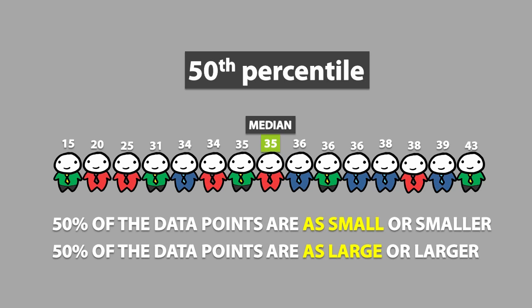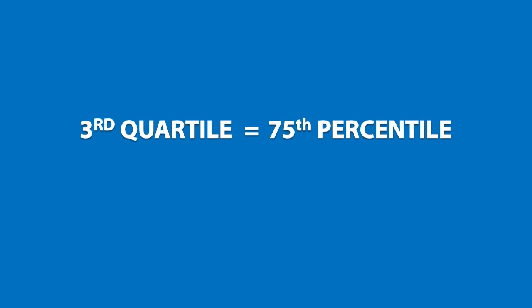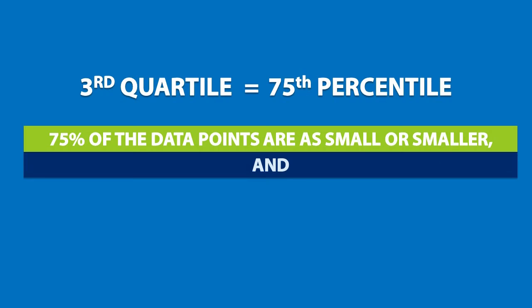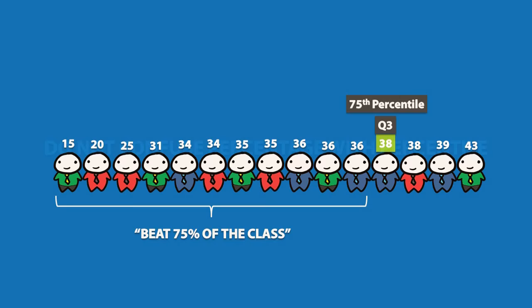Q1 and Q3 are also described as percentiles. For example, the third quartile is also known as the 75th percentile. The 75th percentile is a value in which 75% of the data points are as small or smaller and 25% of the data points are as large or larger. In other words, if someone scored in the 75th percentile, you can say that they beat 75% of the class.